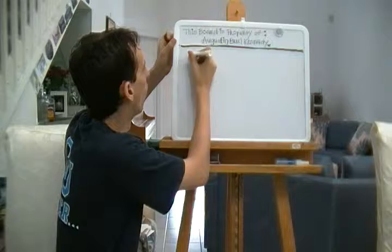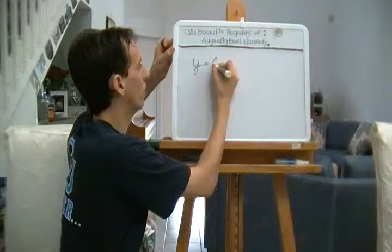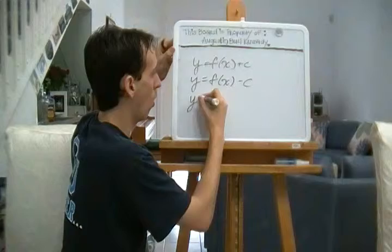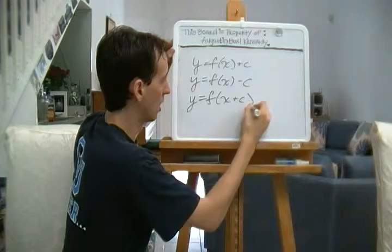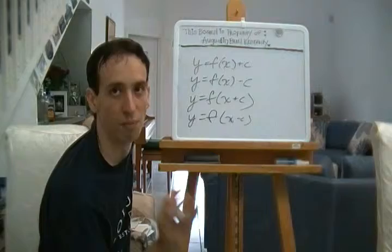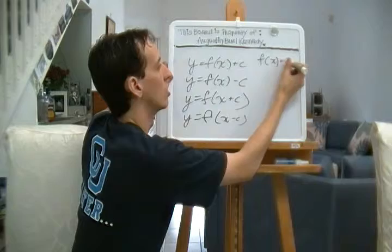Let's start with the first four: Y equals F of X, Y equals F of X plus C, Y equals F of X minus C, Y equals F of X plus C, Y equals F of X minus C. You'll notice the parentheses here are very important because they're going to dramatically alter the graph.